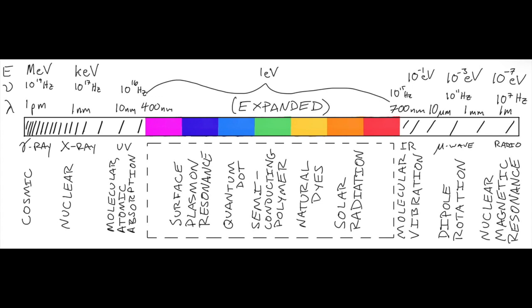Electromagnetic radiation consists of photons. Photon is a word from the particle-type description of light, because light has properties of both waves and particles. What happens when light strikes an object? The answer is scattering, absorption, or nothing.